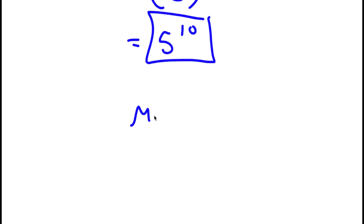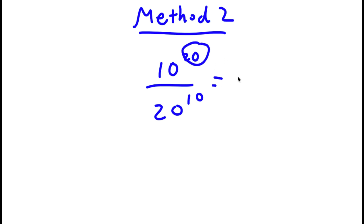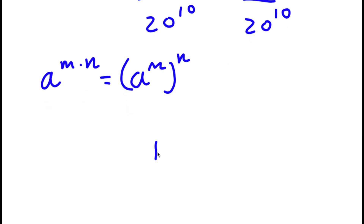I actually have a second method of solving this problem. Starting again with 10 to the power of 20 over 20 to the power of 10, this time I rewrite the exponent 20 as 2 times 10, giving 10 to the power of 2 times 10 over 20 to the power of 10. Using the rule a to the power of m times n equals a to the power of m to the power of n, this becomes 10 to the power of 2 to the power of 10, over 20 to the power of 10.